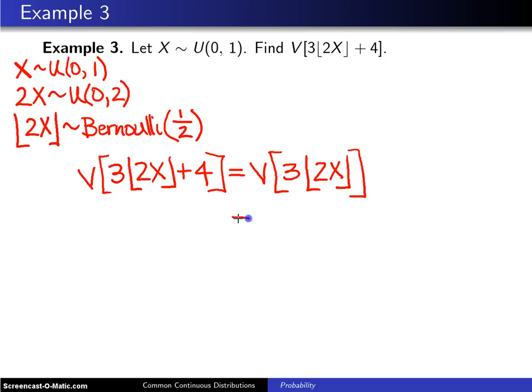Now the second thing to recognize is this constant 3 here can come out front of the variance operator, and it comes out front as a 9. So this is 9 times the variance of the floor of 2X.